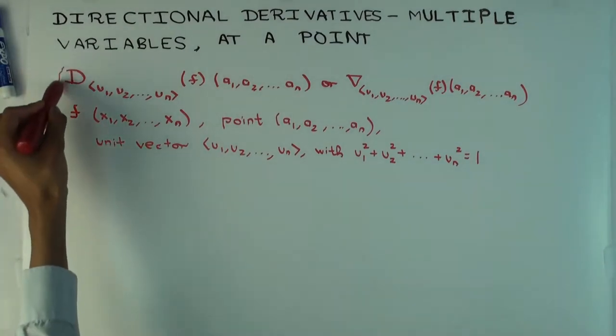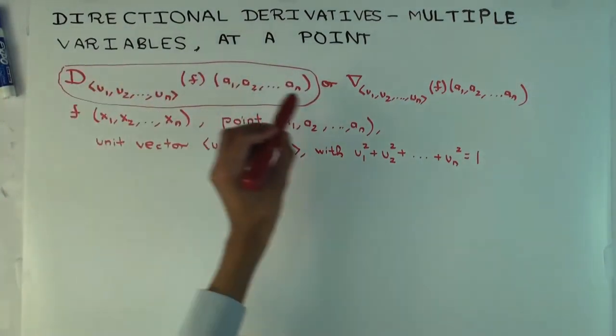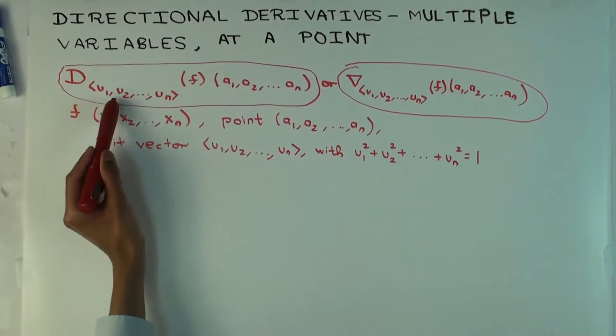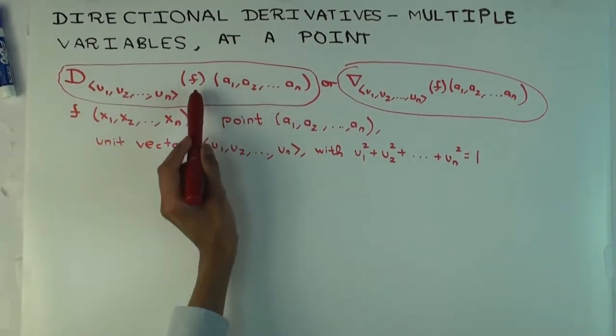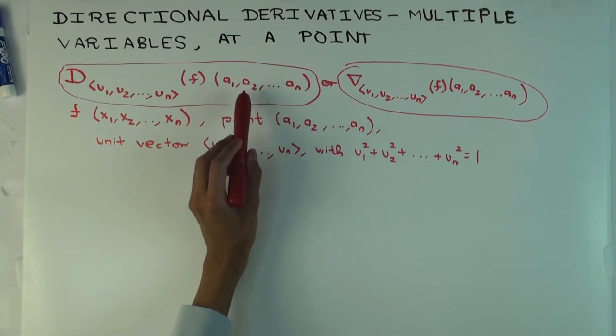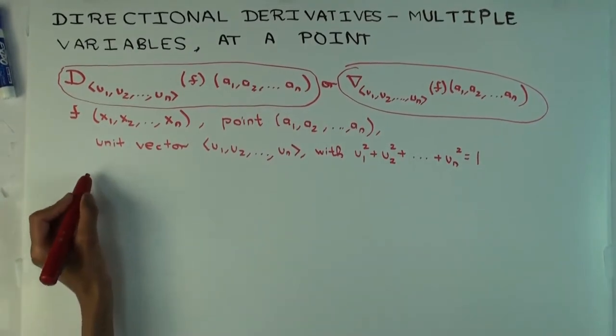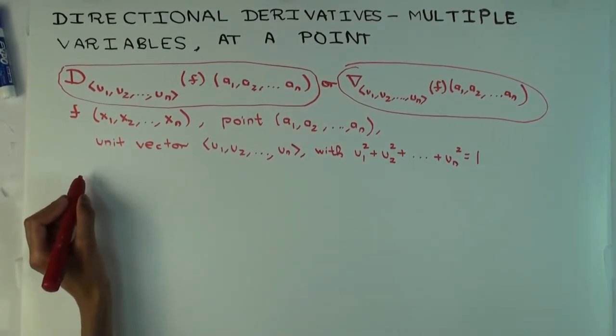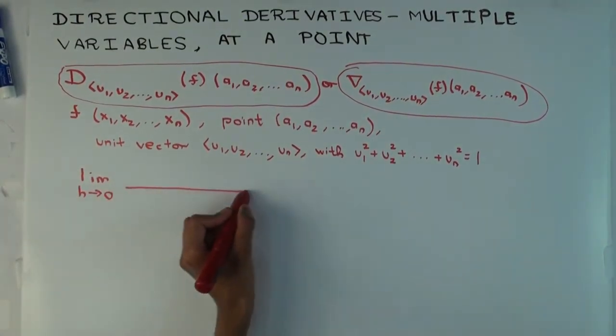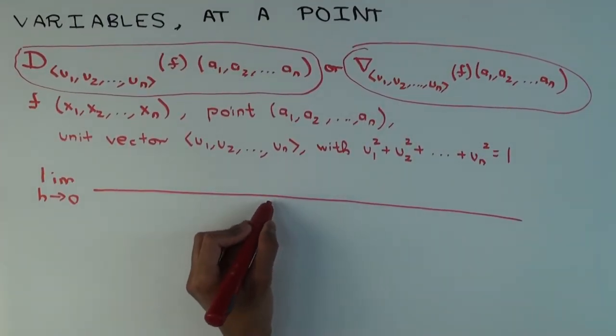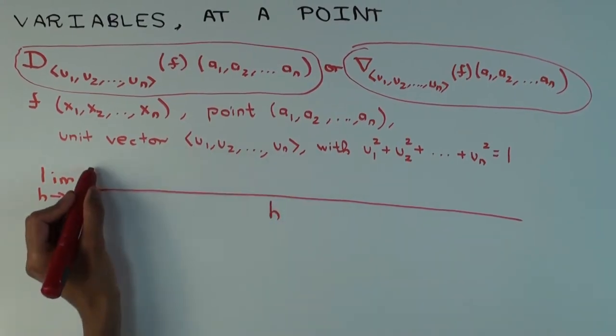And the goal is to now define this directional derivative, which some people also write like this. It's the directional derivative in the direction of this unit vector of this function at this point. So let's try to figure out what that is as a limit. So what is that as a limit? It's the limit as h approaches 0, basically a difference quotient. But what will come here? So the denominator will just be h, what is going to be the numerator?